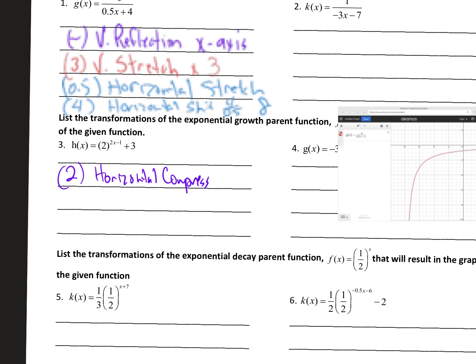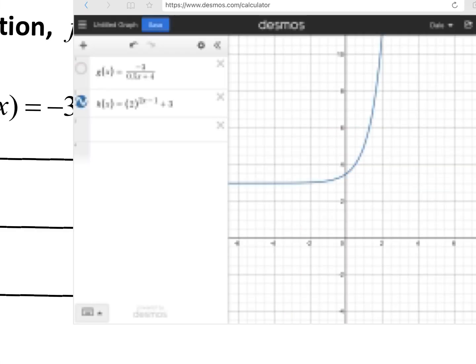So what happens to this negative 1? This is going to be a horizontal shift, but because we're compressing by 2, we've got to divide by 2 — so we're actually shifting it 1 half. This is a horizontal shift of 1 half. And then that 3 is a vertical shift up. Let's put that function into Desmos — you can see the vertical shift up 3 and the shift right on our function. There's no x-intercept, but the y-intercept is at 0, 3.5.